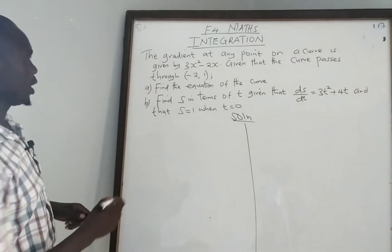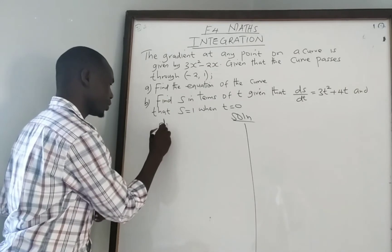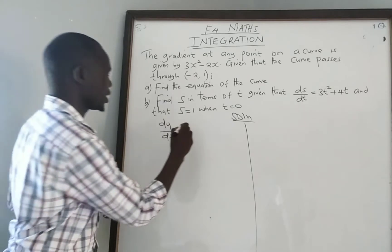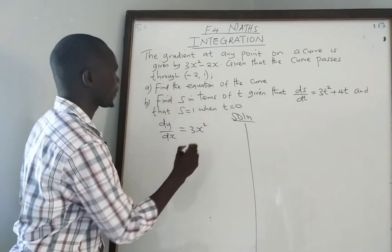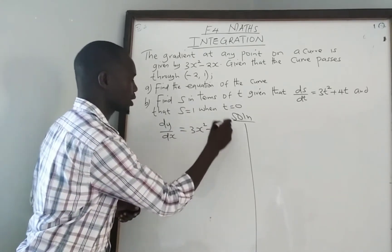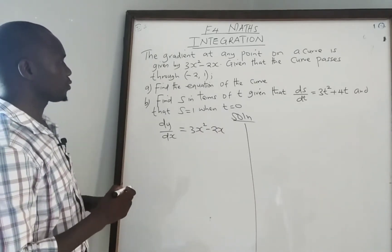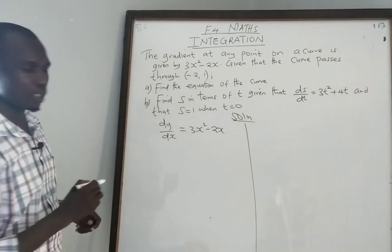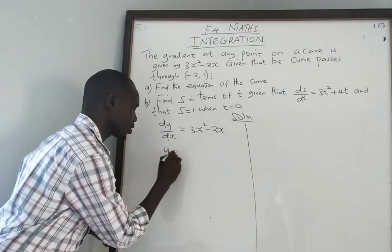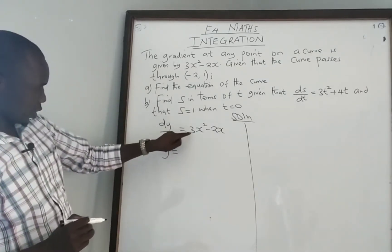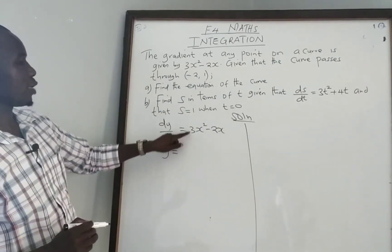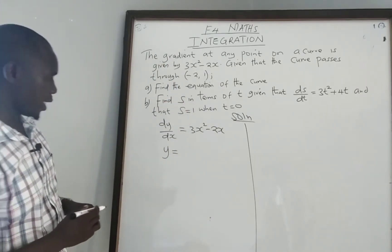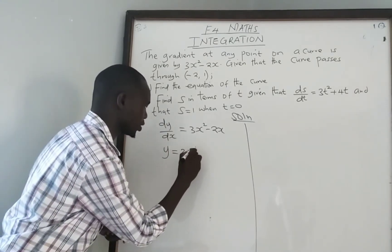We have been given the gradient, which represents dy over dx, and our dy over dx is 3x squared minus 2x. We are supposed to find the equation of the curve, which is going to be in the form of y. So we say y equals — once you've been given dy over dx, you integrate to find y — and therefore we are going to have 3x squared.